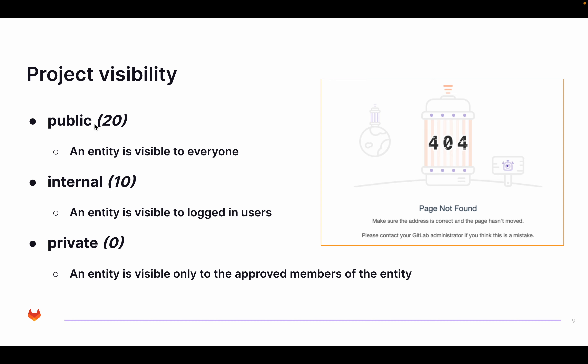GitLab.com, for example, has the GitLab org group, which is public — everyone, even without logging in, can see all open issues within GitLab and even view the source code. Within organizations, we often see private or internal projects, where internal is used in inner-sourcing setups. Inner-sourcing is an internal open-source model where you give everyone access to all software in your organization to enable reuse. With internal visibility, any logged-in user within your organization can access those internal projects.